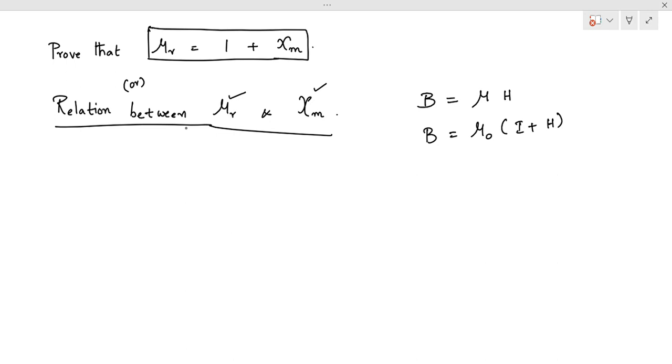Similarly, in magnetism, susceptibility chi M is equal to I by H, and relative permeability mu R is equal to mu by mu 0.